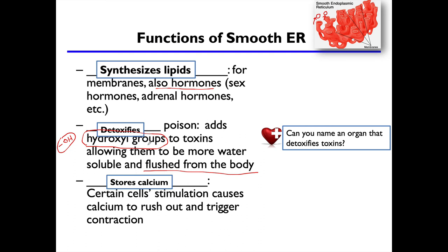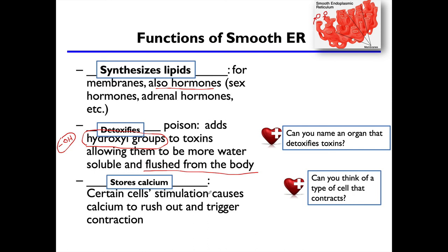The smooth ER also stores calcium. Calcium is absolutely essential to living things — it allows cells to communicate with one another, enables nervous system cells to release neurotransmitters so we can think and feel, and allows muscles to contract and relax. So it's very important that we have a good amount of calcium stored in the smooth ER. And yes, muscle cells are a great example of cells that contract.